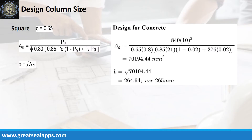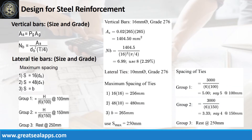Given a factored actual load of 840kN and steel ratio of 2%, the gross area of section is 70,194.44 square millimeters for a column side of 265 millimeters. With a steel ratio of 2% and side of 265mm, the area of steel is 1,404.5 square millimeters, requiring 8 vertical bars of 16mm.